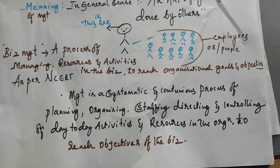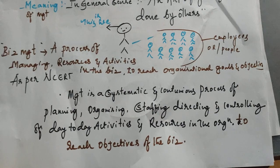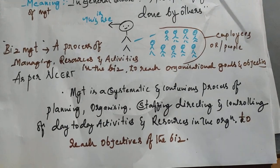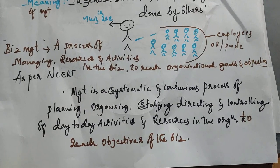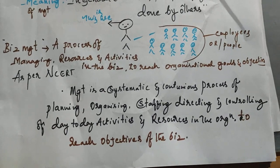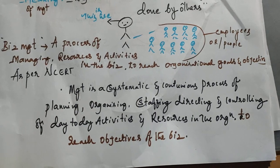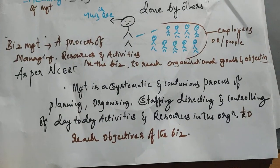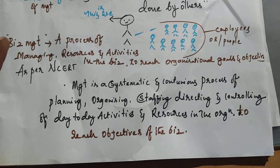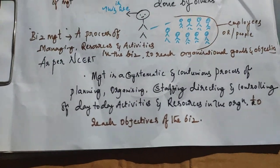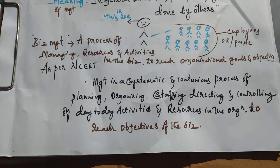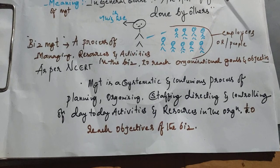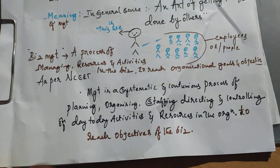Management is a systematic and continuous process of planning, organizing, staffing, directing, and controlling of day-to-day activities and resources in the organization to reach objectives of the business. That is called management. Let me read once again: management is a systematic and continuous process of planning, organizing, staffing, directing, and controlling of day-to-day activities and resources in the organization to reach objectives of the business.